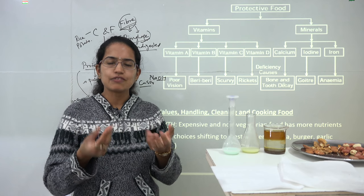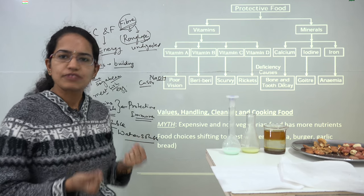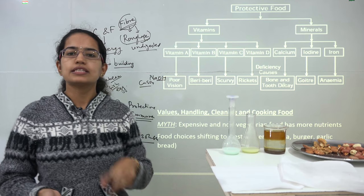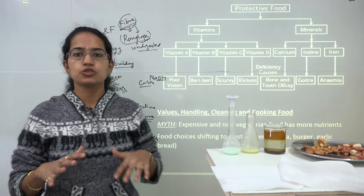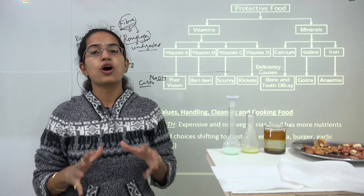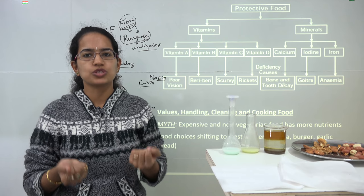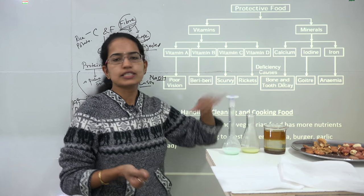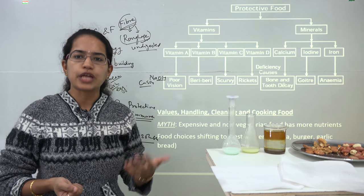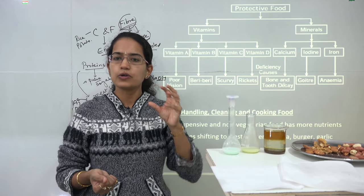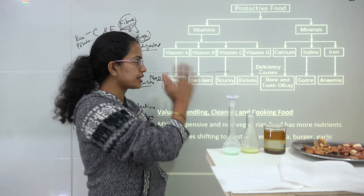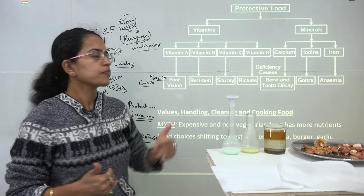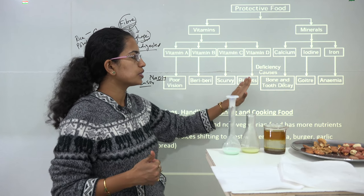Beriberi is a common disease where muscles get weaker due to deficiency of vitamin B. Vitamin C deficiency leads to scurvy, which was common in sailors who could not find vitamin C-rich food in the ocean and suffered predominantly from bleeding gums. Sailors later carried lemons and oranges to meet the deficiency. Vitamin D can be obtained through natural exposure to sunlight, and its deficiency leads to rickets.